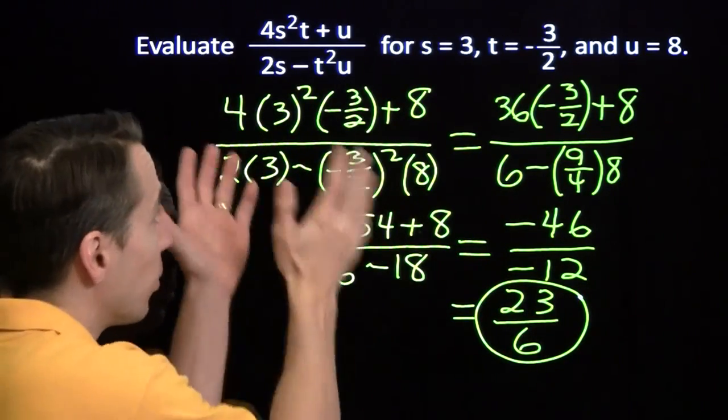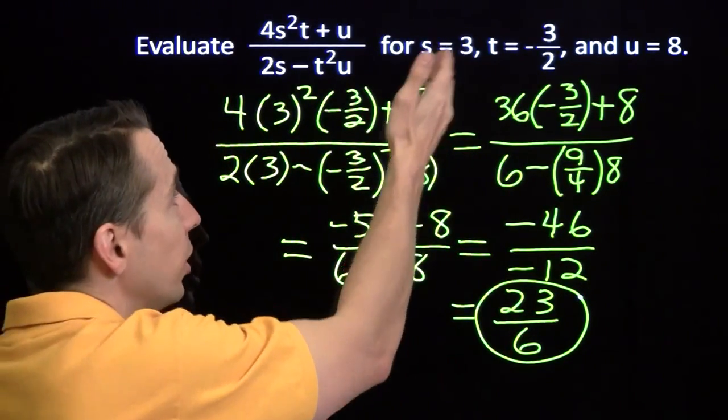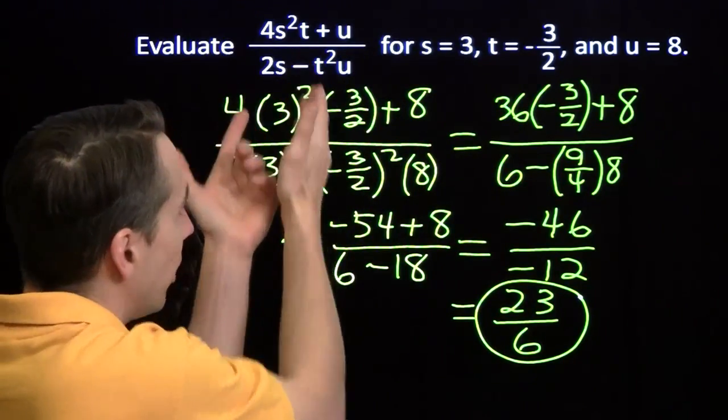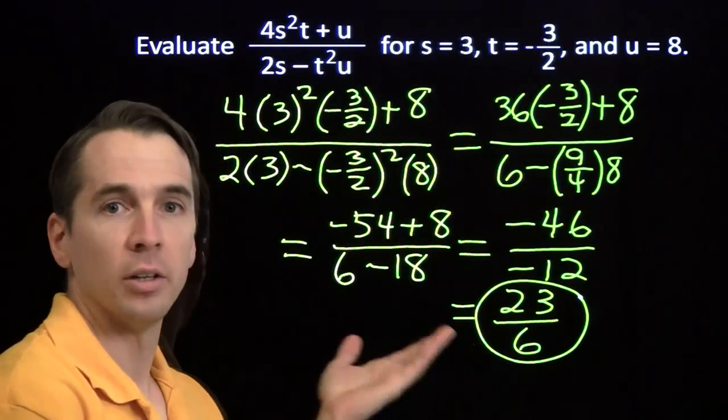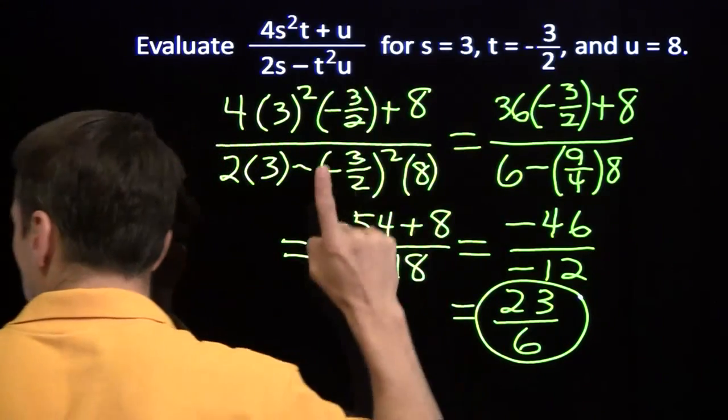All right, so we got that. We got that done. All we're doing here is substituting the values in for the variables wherever we see the variables. And then we have arithmetic, and we crank through the arithmetic.